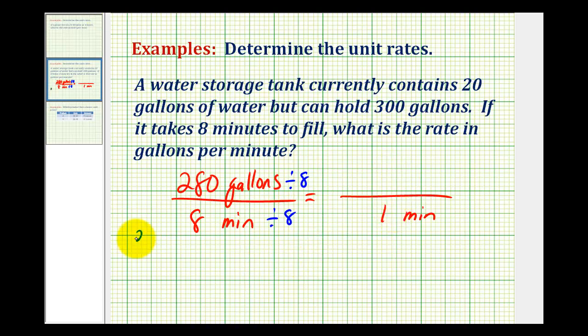So 280 divided by eight, there's three eighths in 28, three times eight is 24. We'll subtract, so four, bring down the zero, and there are five eighths in 40. Five times eight is exactly 40, so it divides evenly.